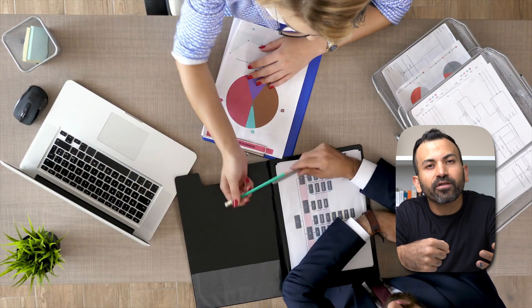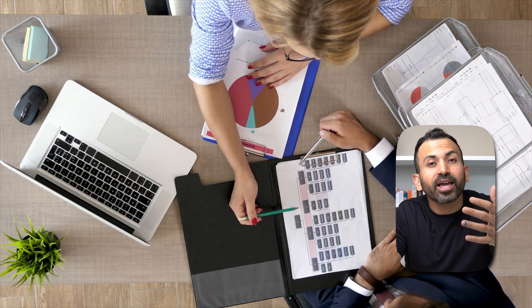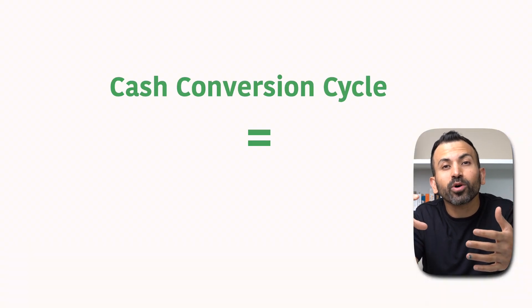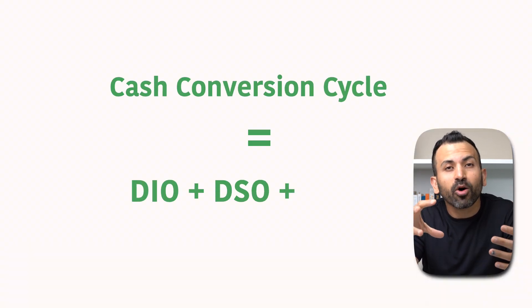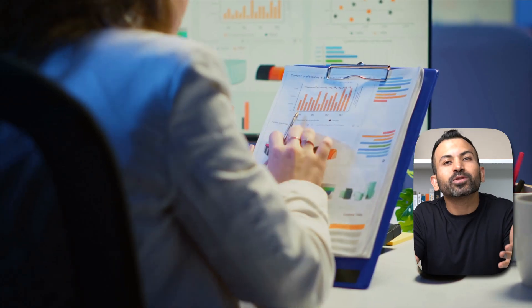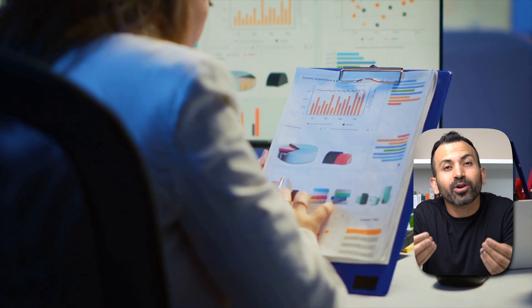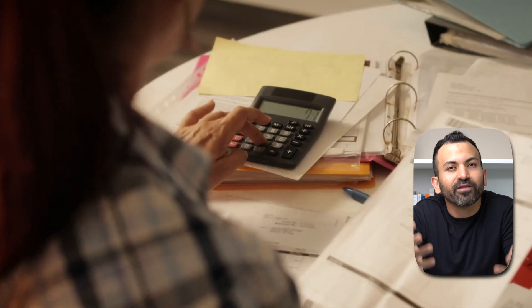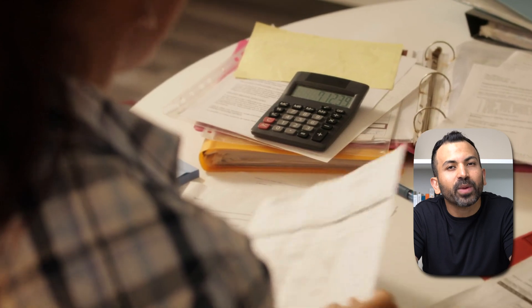If you look at a lot of explanations of what the term cash conversion cycle means, you'll get a lot of accountants who will throw terms at you, such as cash conversion cycle equals DIO plus DSO plus DPO. Accountants throw more acronyms at you, so you become even more confused. In this video, I hope to break down the cash conversion cycle so you can get a simple understanding of it in under 10 minutes.